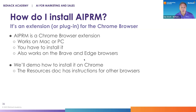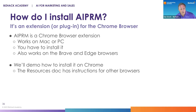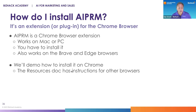To install AIPRM, it's an extension or plug-in for the Chrome browser — Google's Chrome — and it works on Mac or PC, but you do have to install it. It also works on the Brave and Edge browsers. We're going to show you how to install it on Chrome, but the resources doc we share includes instructions for other browsers. You can also just Google 'how do I install AIPRM on a Brave browser' and you'll get a good response.